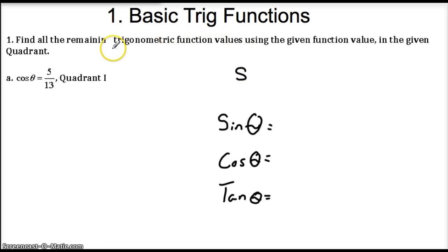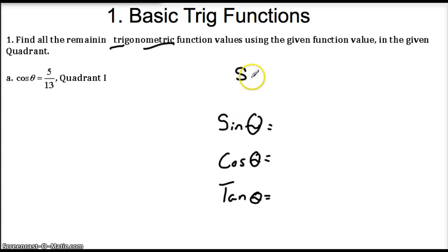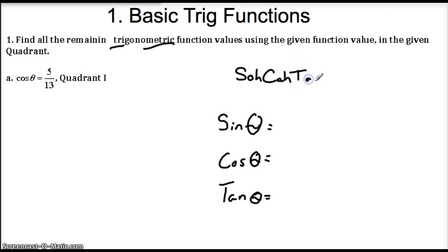Trig being tri — a triangle — and metric being measured, this is just the study of triangles. And the way we remember these ratios is SOH-CAH-TOA: sine is opposite over hypotenuse, cosine is adjacent over hypotenuse, and tangent is opposite over adjacent. That's the way we remember these ratios.